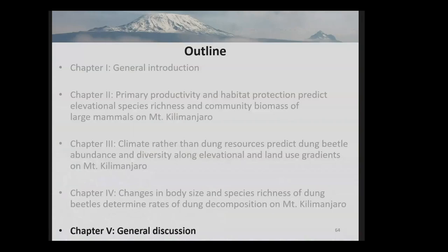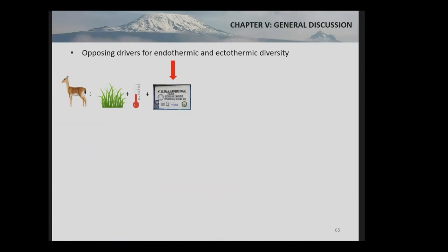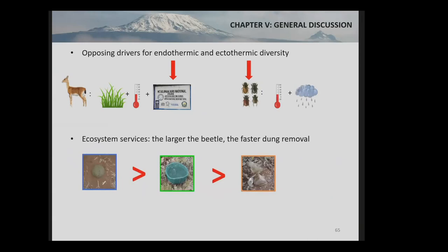With this I would like to end with a short discussion. I could show that there are different drivers for endothermic and ectothermic organisms along the huge elevation gradient of Mount Kilimanjaro. For mammals, primary productivity and temperature, as well as the protection status of study plots, were very important. For dung beetles, the main factors were temperature and precipitation, and there was no impact of resource availability. I also showed that large dung beetles are the most important for dung decomposition, and that functional traits must be assessed when evaluating dung beetle ecosystem services.